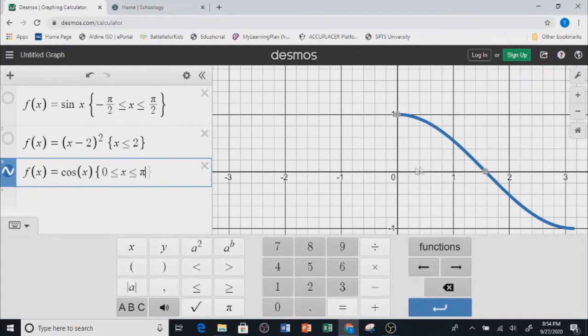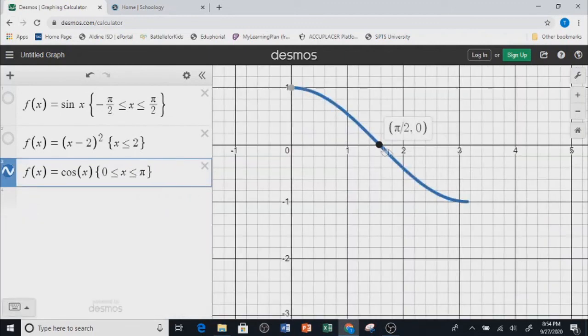So you see, now we have this restricted cosine.